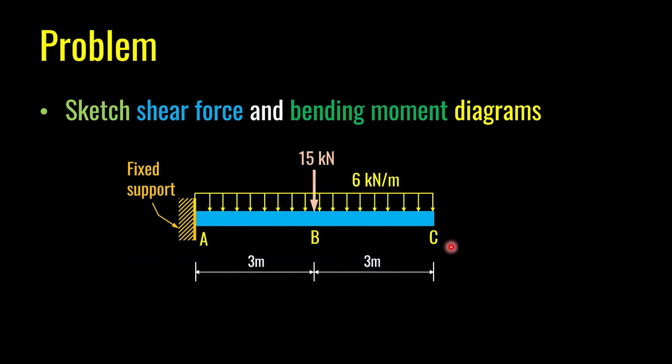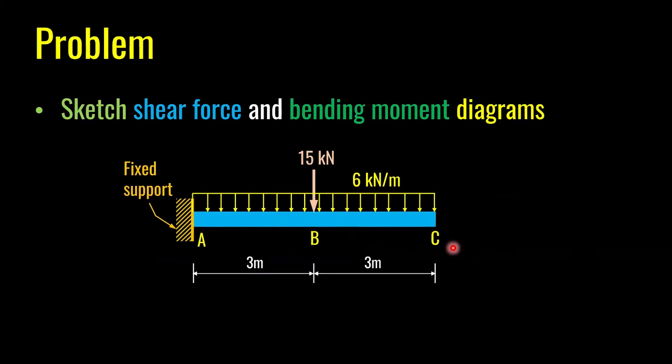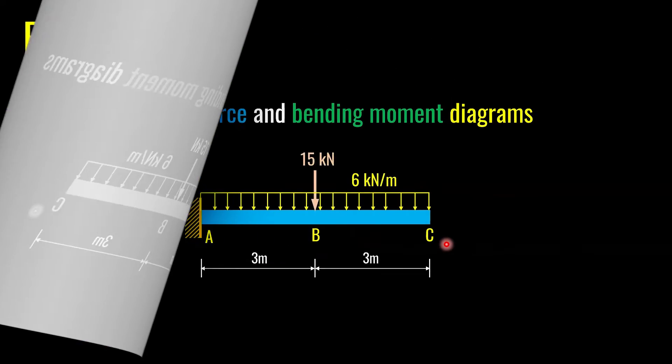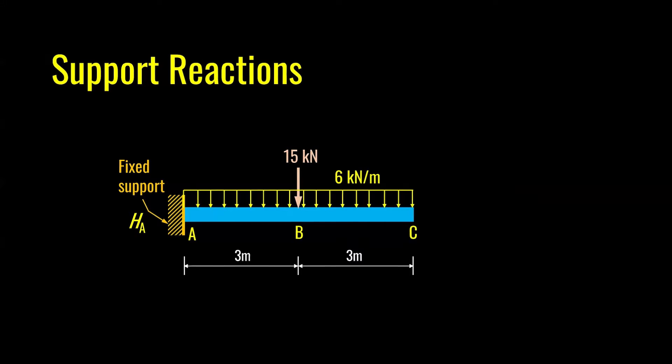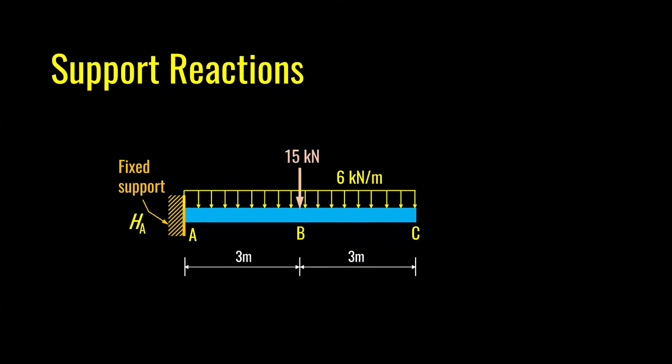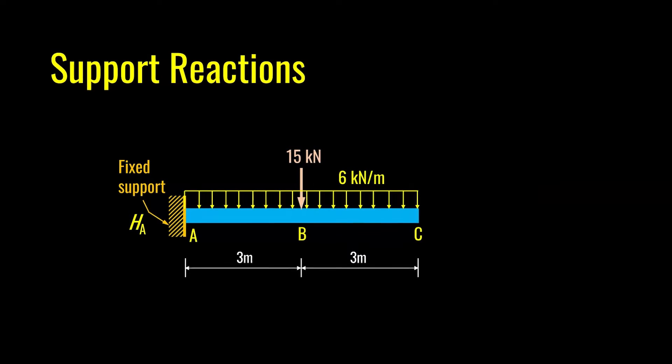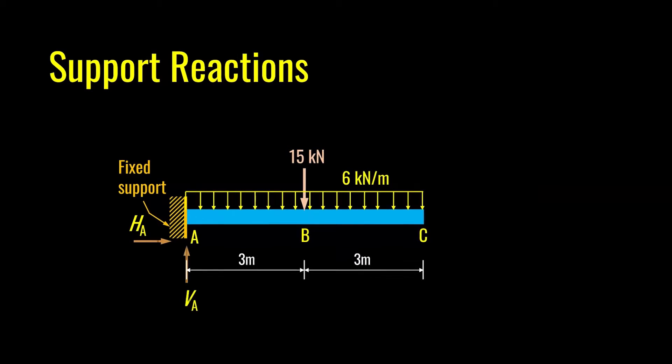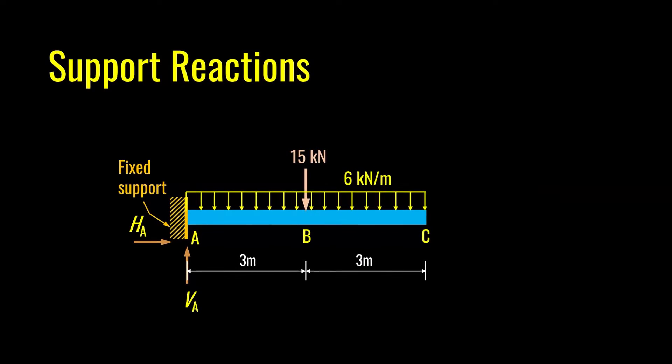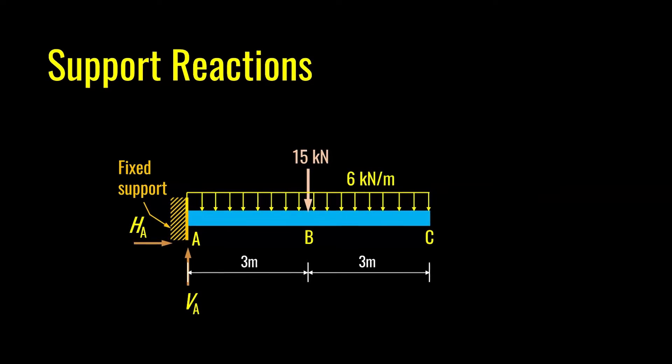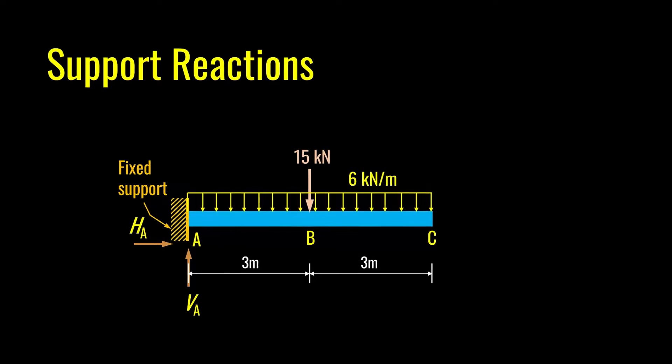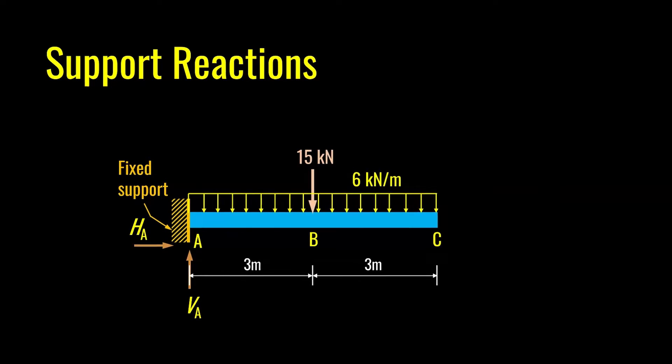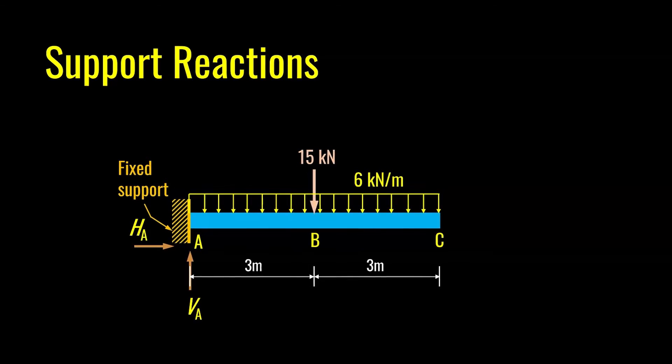As you know, for finding shear force and bending moment diagram, we need to work out reactions first. For a cantilever beam, how many reactions will be there? It will have three reactions: horizontal and vertical reaction. And additionally, it will have a reaction moment as well. Because the joint is fixed at point A, it will generate a resisting or reaction moment.